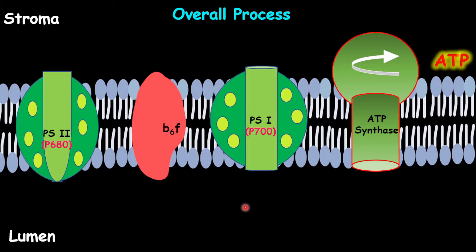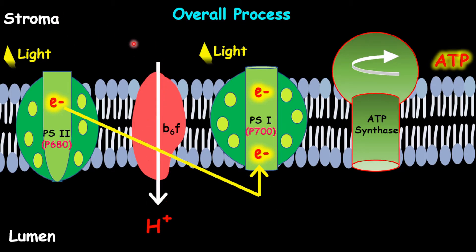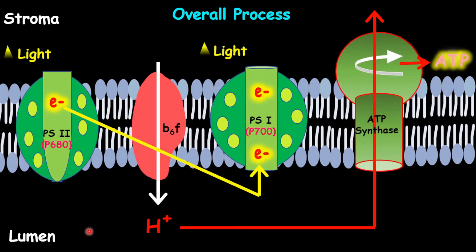As an overall process, light will be absorbed by photosystem 1 and 2; however, photosystem 2 is the first reaction. In photosystem 2, light is absorbed by the pigments, causing electrons to be excited and kicked out of the chlorophyll, then transferred to photosystem 1. After this, there will be a surge of hydrogen ions within the stroma, and because of this high concentration, hydrogen ions will pass into the lumen. As a result, hydrogen ions are transported to the ATP synthase, stimulating it to produce ATP. That's the overall process for the light-dependent reactions.